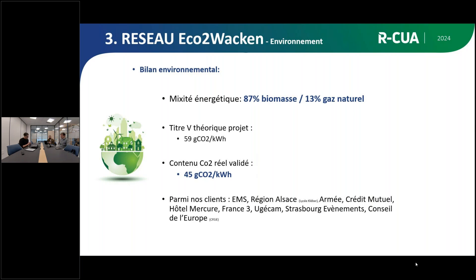D'un point de vue environnemental, le réseau est à 87 % de biomasse. On certifie les contenus CO2 de nos réseaux : on pensait être à 59 g de CO2 par kWh avant la mise en service, sachant que le gaz est à 234 g de CO2 par kWh. Le réseau du Wacken, remesuré chaque année, a été validé à moins de 50 g — soit 45 g de CO2 par kWh. Grâce à l'interfaçage avec la chaleur de récupération industrielle, on est en train de faire baisser drastiquement ce contenu CO2, qui va progressivement se rapprocher des 10 g de CO2 par kWh.